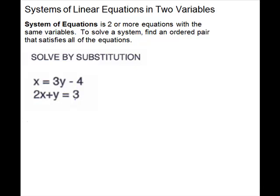In the second equation, you're just going to substitute whatever that first one is equal to. So x is equal to 3y minus 4. I'm going to replace the x in the second equation by 3y minus 4. Keep everything else — we'll need to use parentheses.